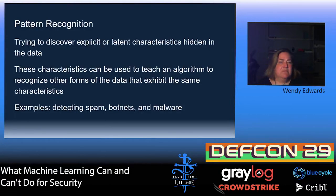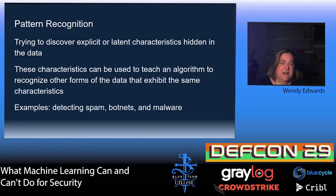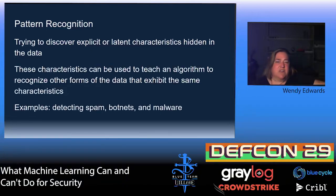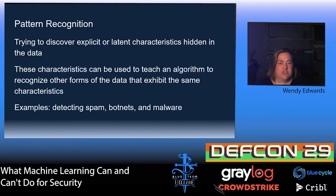One big thing in machine learning is pattern recognition — you're trying to discover explicit or latent characteristics hidden in the data. You can use an algorithm to recognize other forms of the data with the same characteristics. For example, botnets or command-and-control channels very often show similar behavior, and you also see similar patterns in malware.